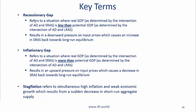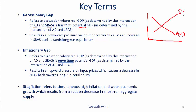A recessionary gap refers to a situation where real GDP — as determined by the intersection of aggregate demand and short run aggregate supply — is less than potential GDP. If potential GDP is at Y2 and current real GDP is at Y1, then this gap is a recessionary gap. Your current output is less than what it potentially can be. An inflationary gap is the other scenario, where real GDP exceeds potential GDP.